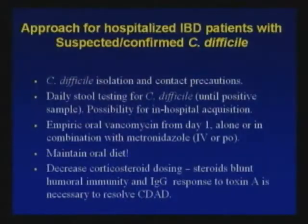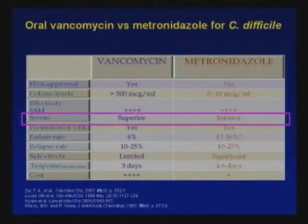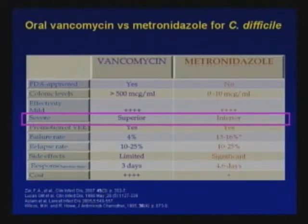I would recommend decreasing corticosteroid dosing. The non-specific effect of high-dose intravenous steroids is really probably the worst actor in a patient suffering from this true infection. Making the IgG response to toxin A is really critical for these patients to get better. What we have here is a head-to-head comparison of vancomycin and metronidazole. For severely ill hospitalized individuals, there is clear evidence that vancomycin is a superior approach — and this is always oral vancomycin. Intravenous vancomycin has no efficacy whatsoever in the treatment of C. difficile.